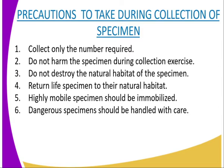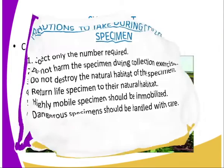Five, highly mobile specimen should be immobilized using suitable chemical substances. These chemical substances include chloromethane — in simple terms, chloroform. You can also use ethyl dimethane, which is diethyl ether. This is to allow for observations. Those are the precautions to be observed.